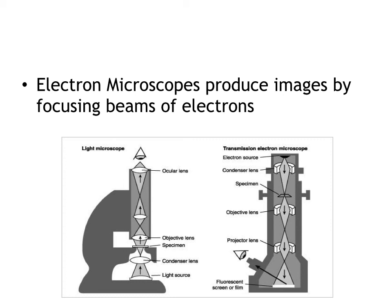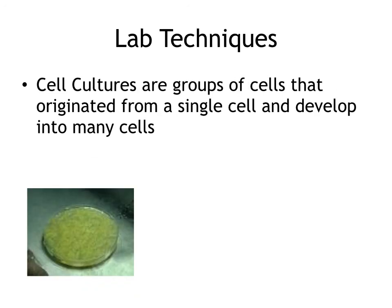An electron microscope focuses beams of electrons. A transmission electron microscope has the electron source at the top, focusing electrons down through the specimen, through the objective lens, through a projector lens, and then we can see it. On the left is a standard light microscope we've used in class. Cell cultures are groups of cells that originally developed from a single cell — this is a bacterial cell culture on an agar plate, and AP students will be doing many cell cultures throughout the year.